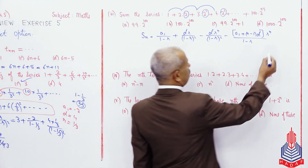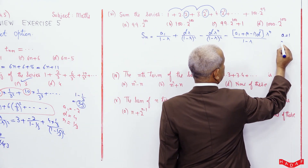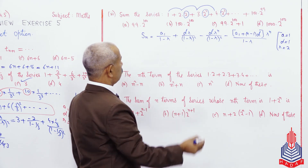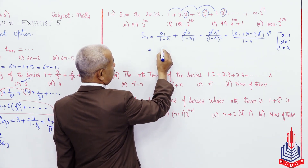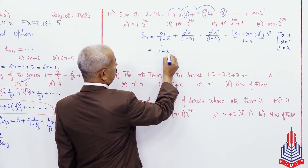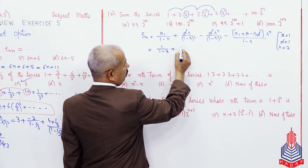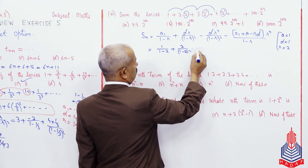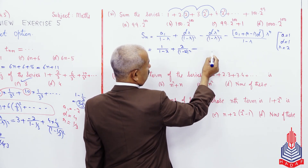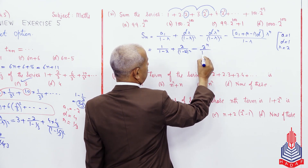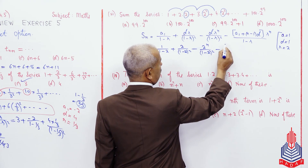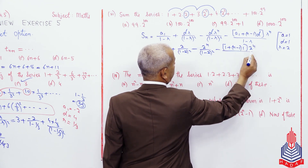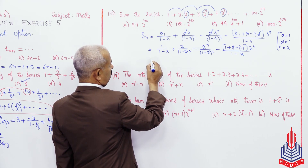In this formula, a = 1, d = 1, r = 2. Substituting: 1 divided by (1 minus 2) plus 1 into 2 divided by (1 minus 2)² minus 2^n divided by (1 minus 2)² minus [1 + (n minus 1) into 1] into 2^n divided by (1 minus 2).